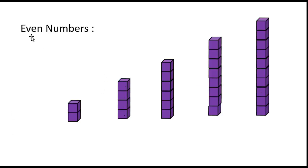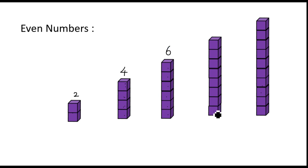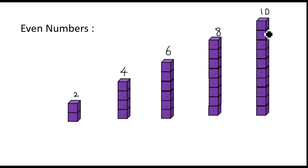Now we will see what is an even number. Count the blocks: one, two — two blocks, write two. Here: one, two, three, four — four blocks, write four. Here: one, two, three, four, five, six — six blocks. Here: one, two, three, four, five, six, seven, eight — eight blocks. And here: one, two, three, four, five, six, seven, eight, nine, ten — ten blocks. This is called one rod of ten blocks.